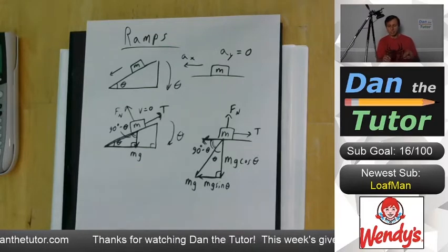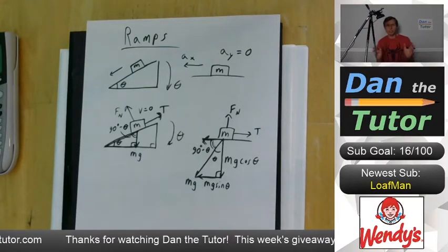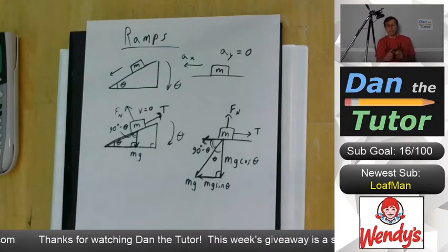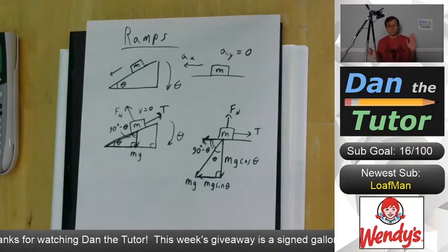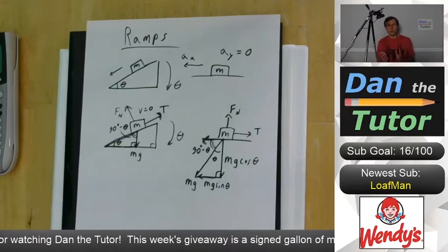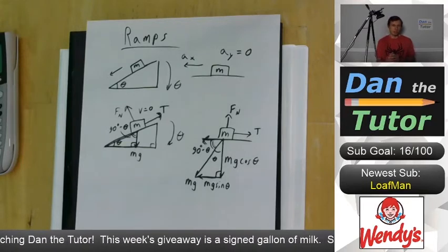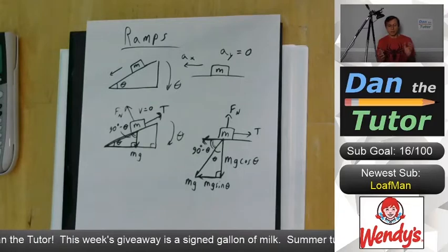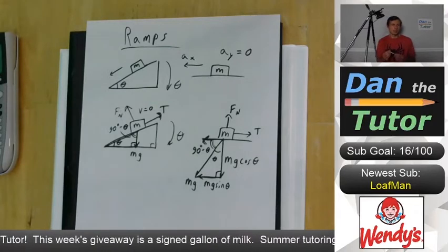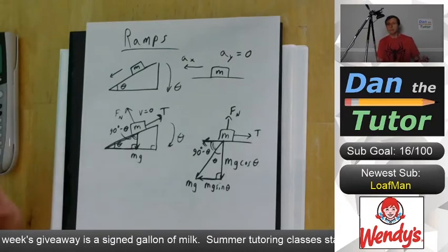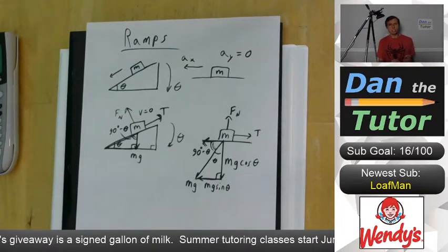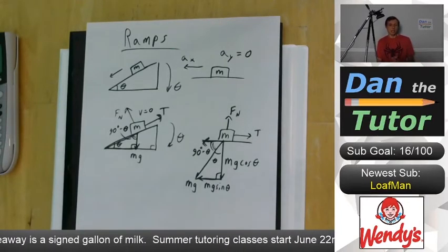So now we have mg, we have it split up into components. And believe it or not, that's all encompassed under step one, which is to draw the free body diagram and split things into their components. Once we're done with that, we're actually, I would say most of the way done the problem. Not all the way, but at least halfway there for sure.